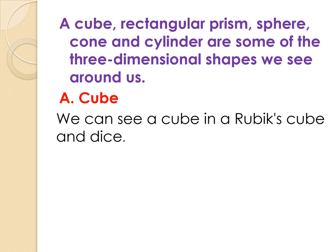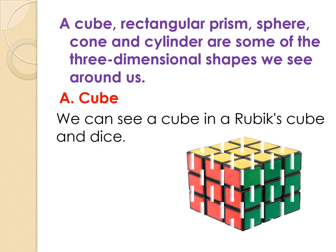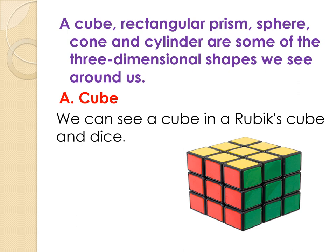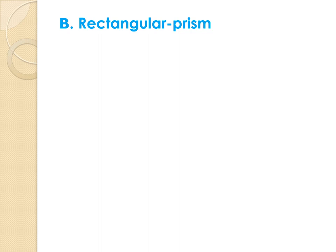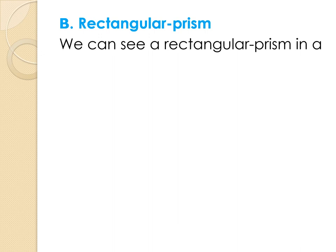Cube. We can see a cube in a Rubik's cube and a dice. Rectangular prism. We can see a rectangular prism in a book and a box.